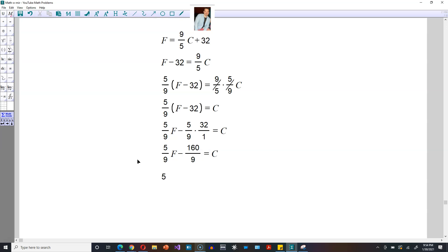And then you just simplify it, so it becomes 5 over 9F minus 18. 160 divided by 9 is 18, is equal to C. And that's the solution for C.